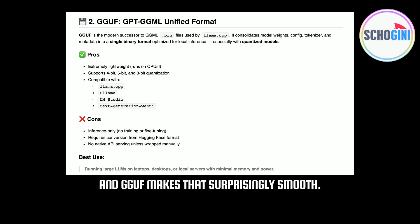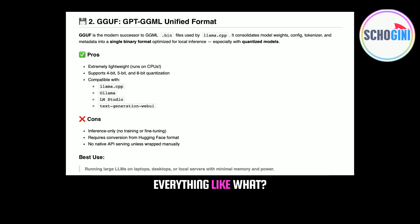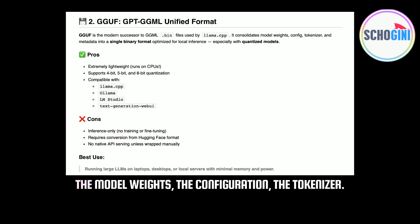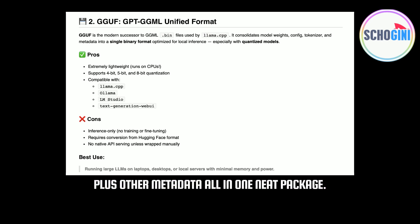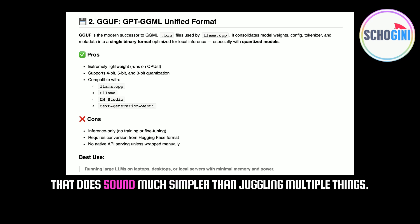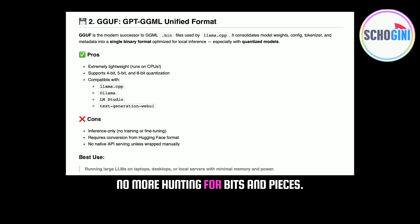GGUF makes local inference surprisingly smooth. Its big selling point is that it puts everything into one single binary file — the model weights, the configuration, the tokenizer (that's the part that understands the text), plus other metadata, all in one neat package. That makes sharing and running models, especially on your CPU, way easier. No more hunting for bits and pieces.